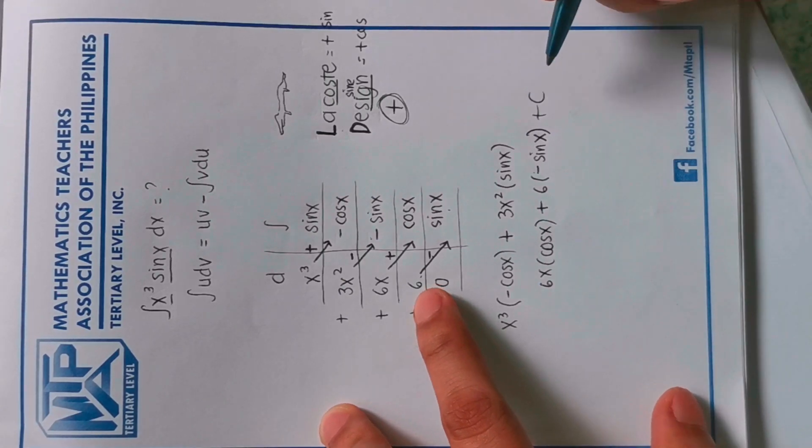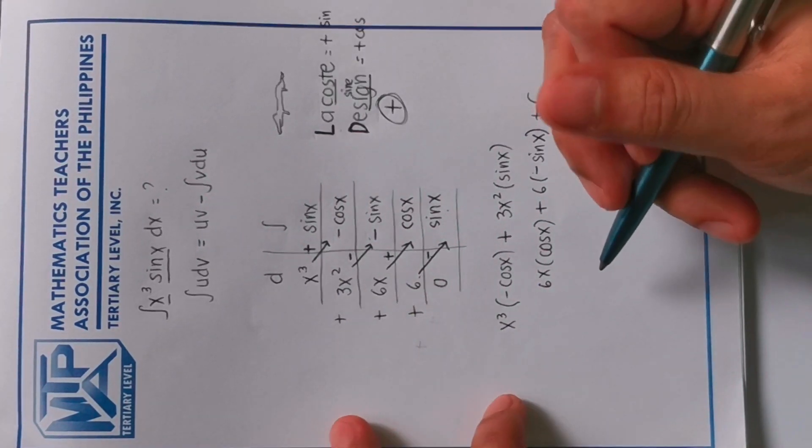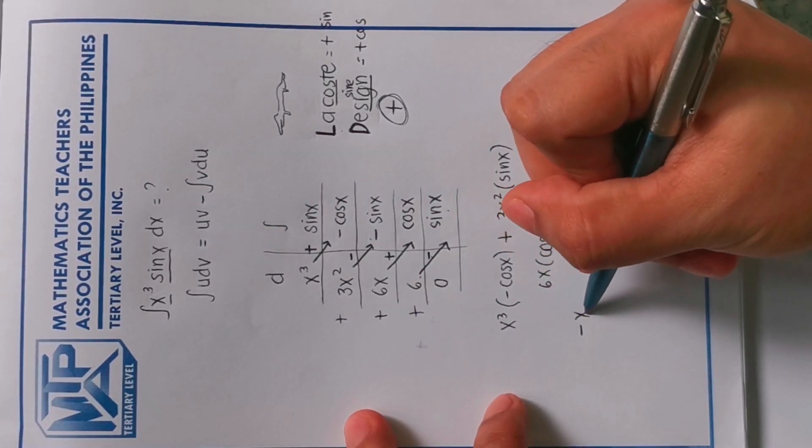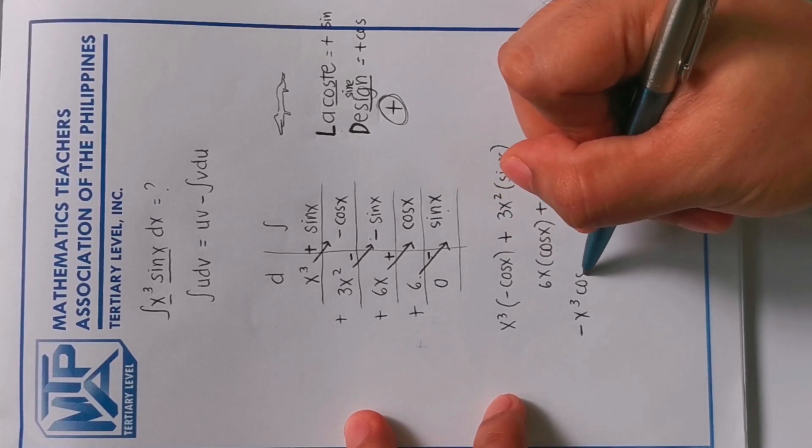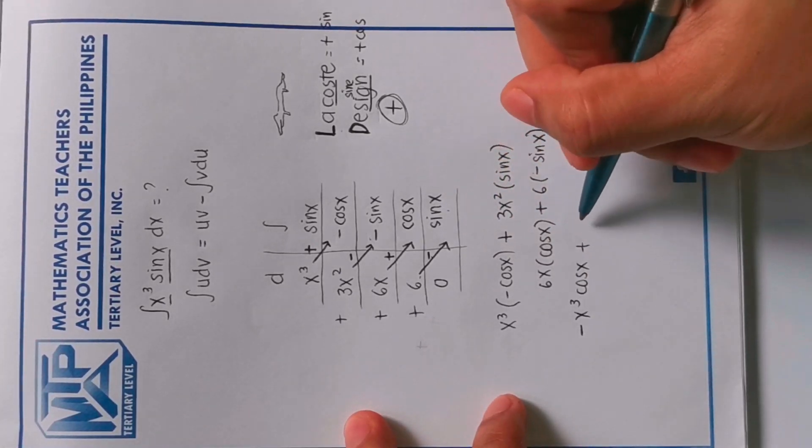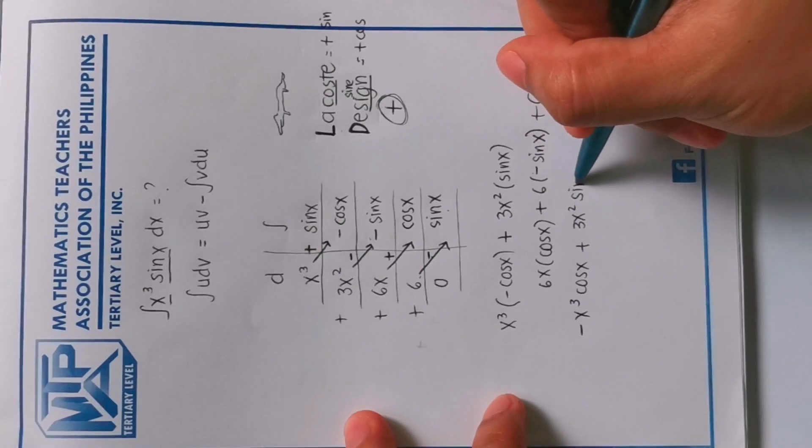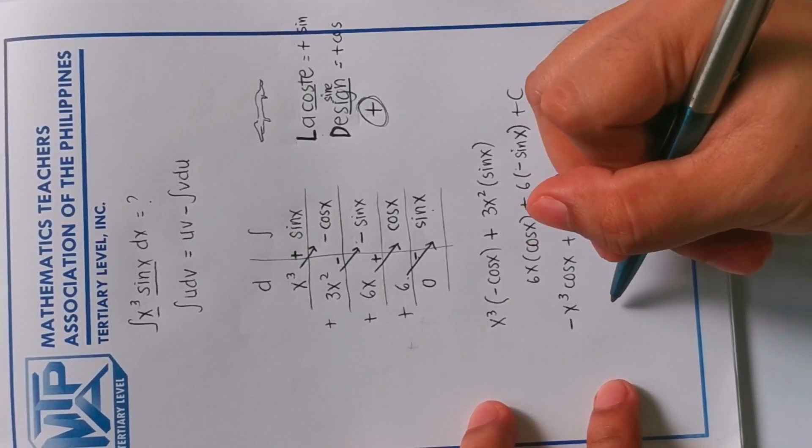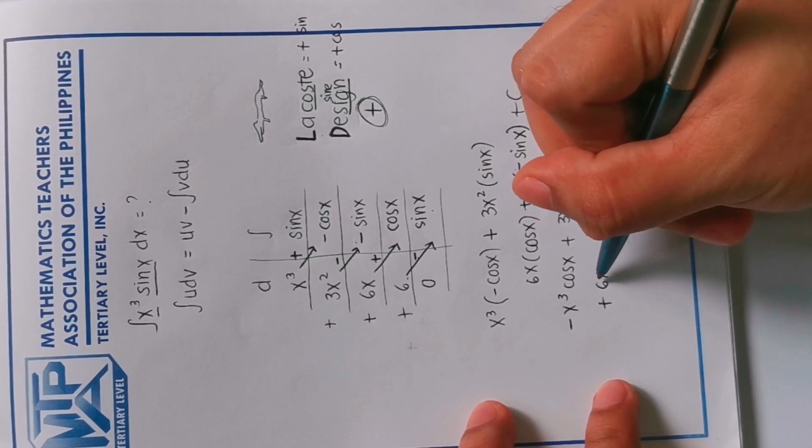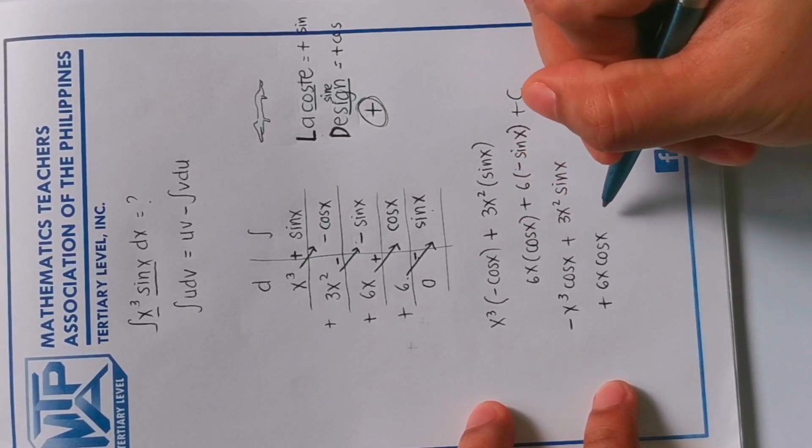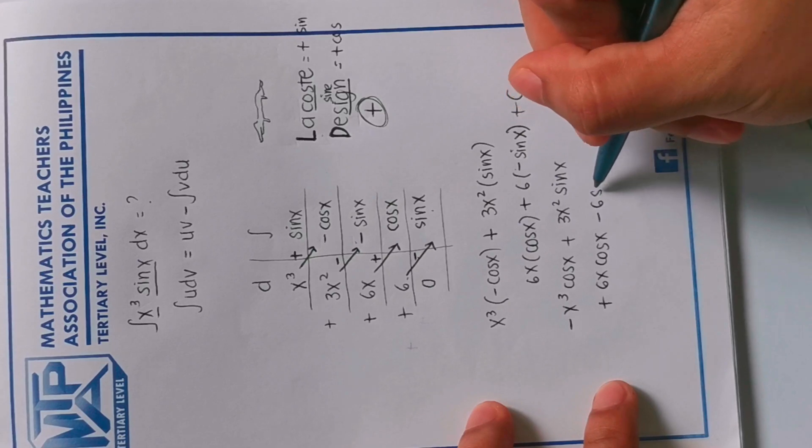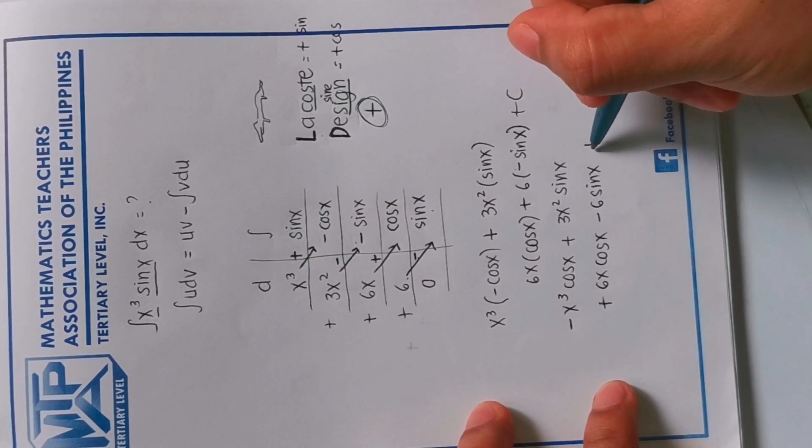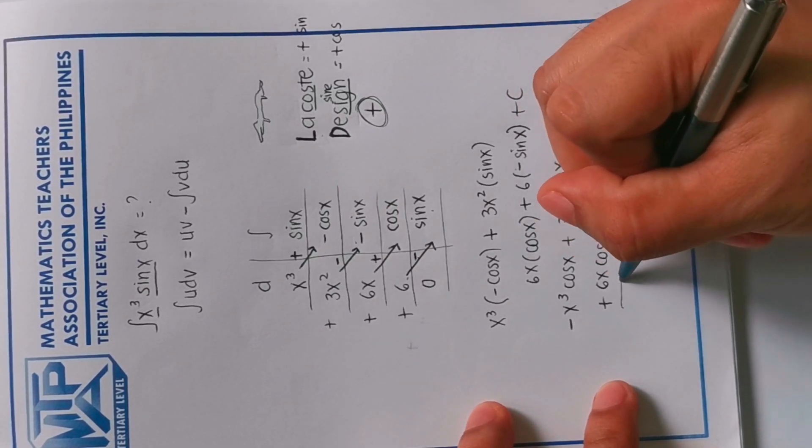Plus c. So we're gonna simplify this. This will become negative x cubed cosine x plus 3x squared sine x plus 6x cosine x minus 6 sine x plus c. This is the final answer.